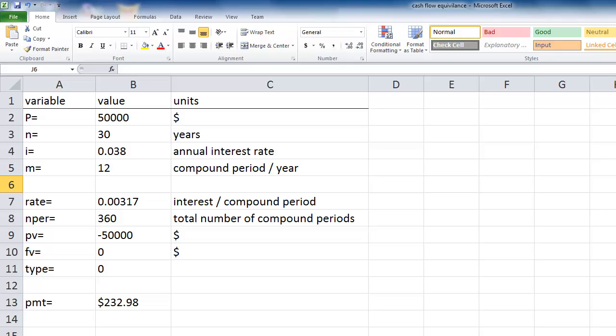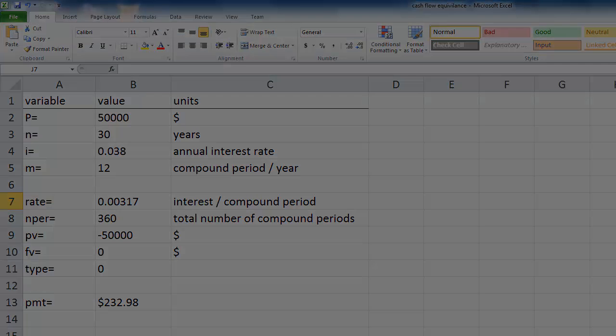You may be surprised to see that even though the 30-year loan is twice as long as the 15-year loan, the monthly payment isn't half of the 15-year loan. This is because of the time value of money and illustrates why cash flow equivalence is analyzed.